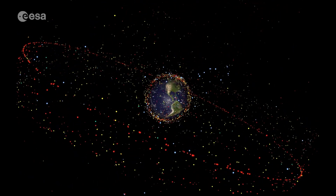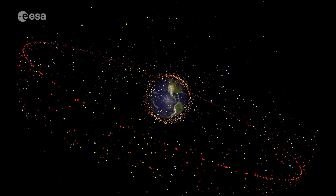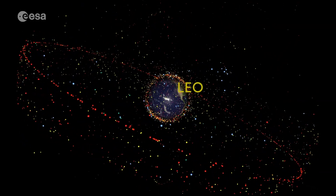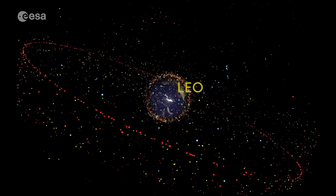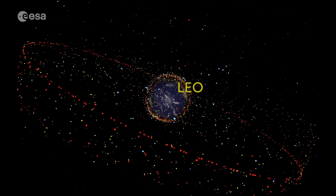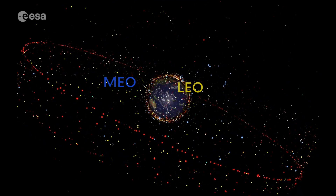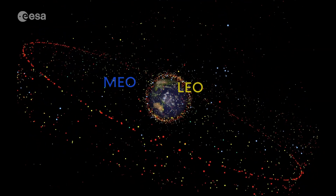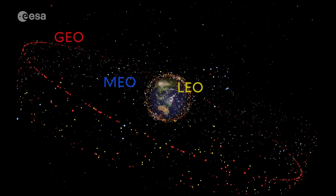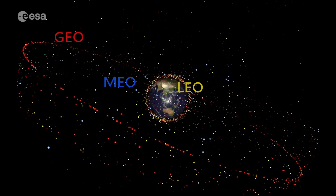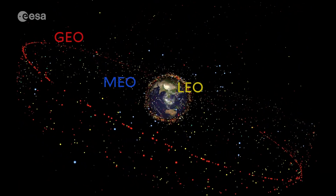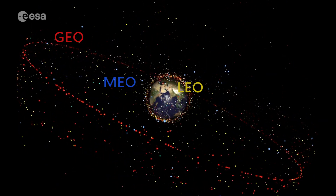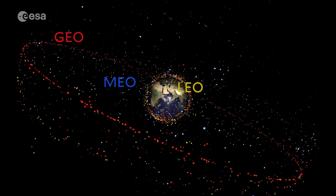Coming back to the animation, I can now label these regions. LEO — low Earth orbit — are objects really close to the Earth. MEO — medium Earth orbits — are farther out. And now we have a name for this ring or ribbon of objects: GEO, or geosynchronous orbits. In the next segment, we'll come up with a way to describe and quantify these orbits, and then we'll dig into each of these regions separately.